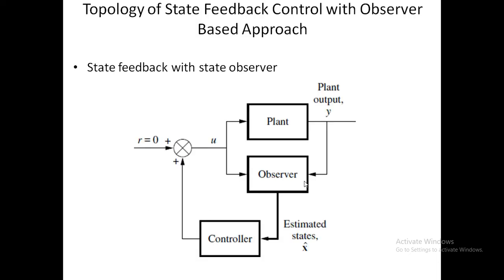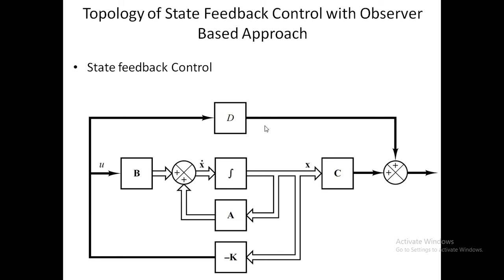This block diagram presents state feedback with a state observer. The controller is here and the observer estimates the value of x-bar using the output with reference to the input. This controller gives a signal to the reference input, which further goes as input to both the observer and the plant. This is the basic concept of state feedback with state observer.